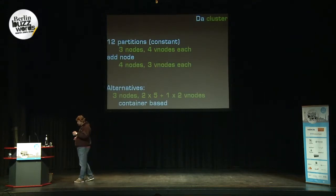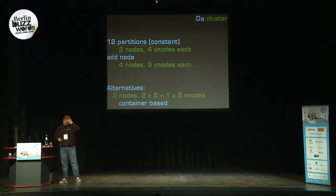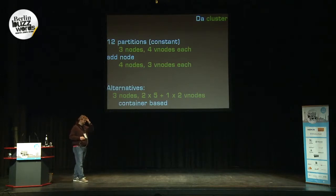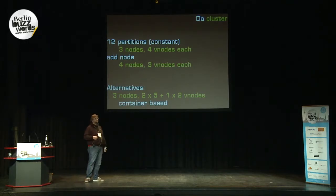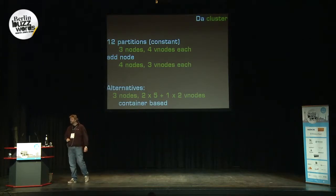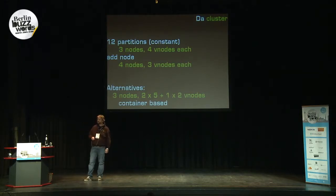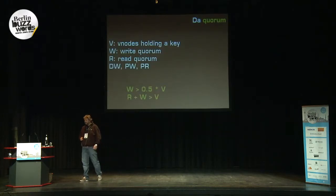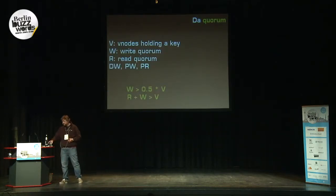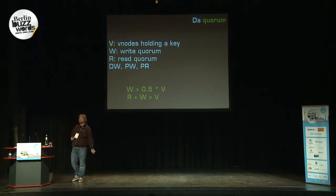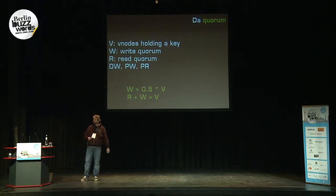Riak provides much more reliability, not only using physical nodes but also virtual nodes. You have a much finer separation — split into chunks — deciding where chunks go physically. I can have a quorum, of course. I suppose you know about the Amazon Dynamo paper and whatnot.